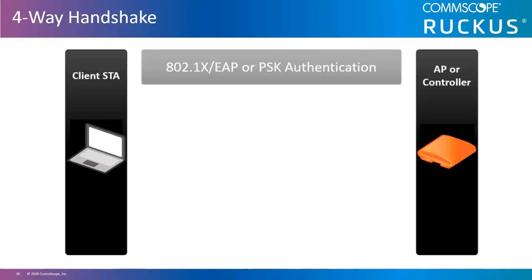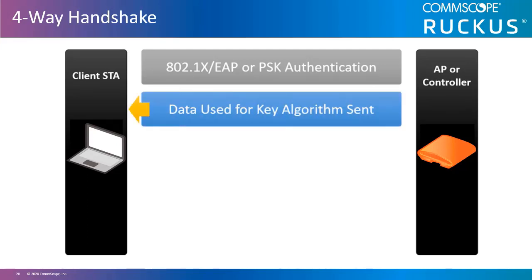After authentication, either pre-shared key or 802.1X EAP, a four-way handshake must occur. This four-way handshake accomplishes two things. First, it is used to generate the encryption keys to encrypt traffic between the client and the access point. These messages contain randomly generated numeric information called the NONCE, number used once. The access point starts first by sending its randomly generated NONCE called an ANONCE, or authenticator number used once.